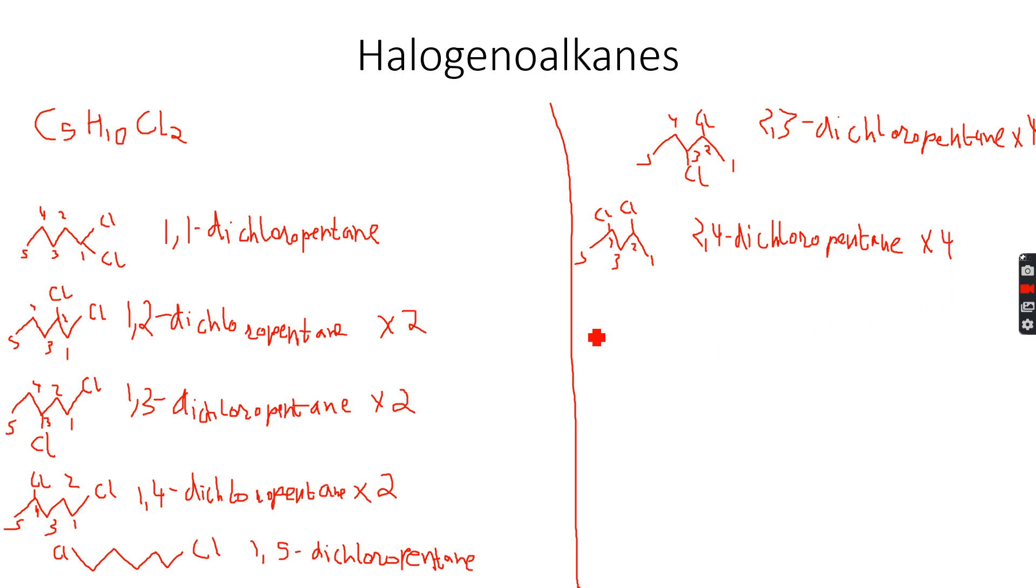Now let's move on to the branched isomers for this one. So let's have a 4 carbon chain and let's see there is a methyl group on this one. There is a chlorine here and a chlorine here. So you can see that in any case the longest chain has 4 carbon atoms in it.